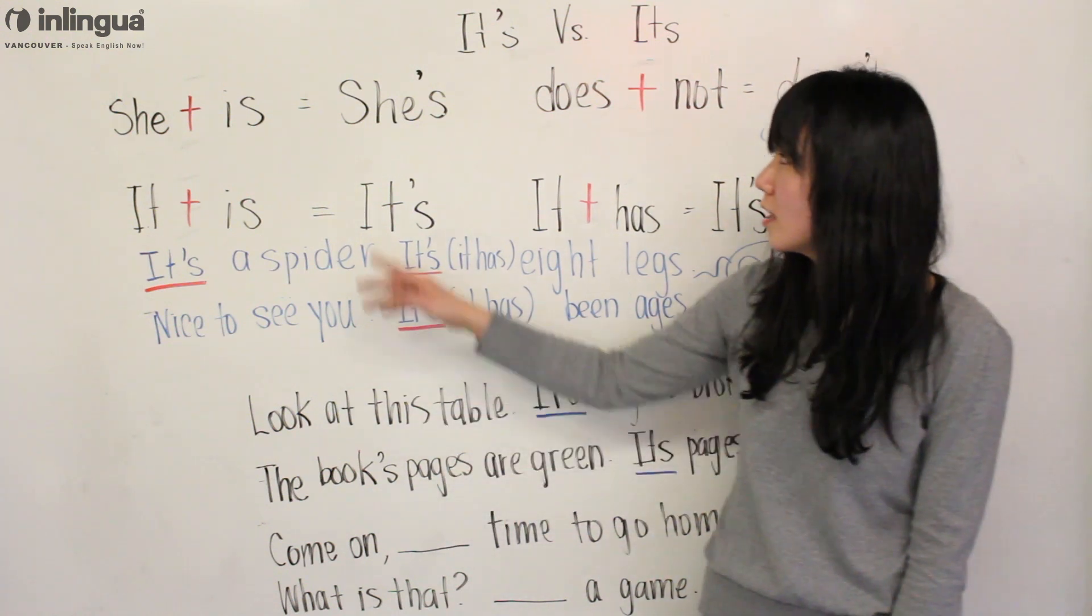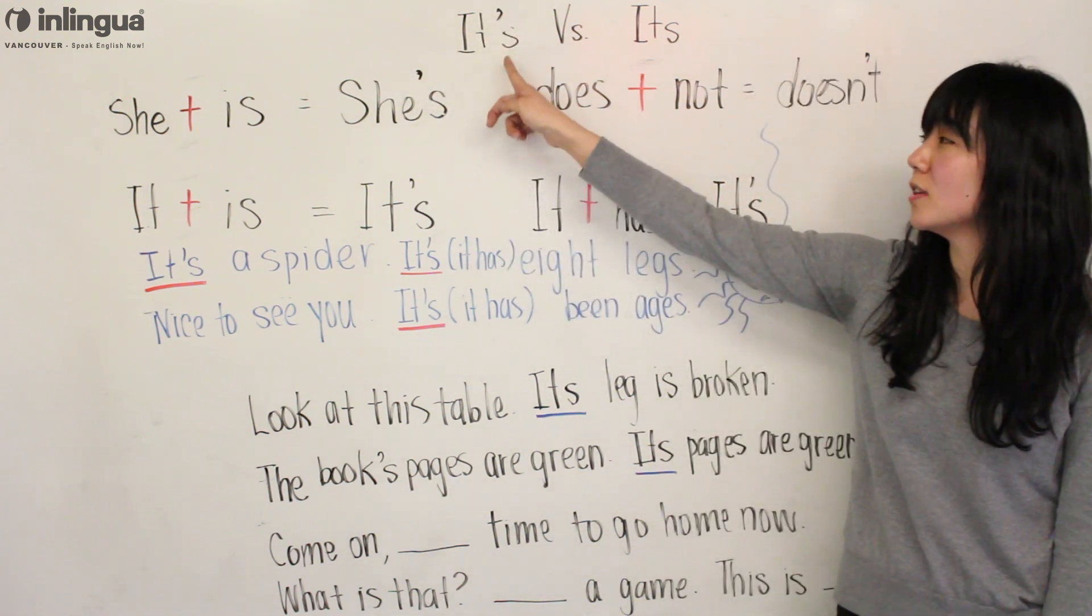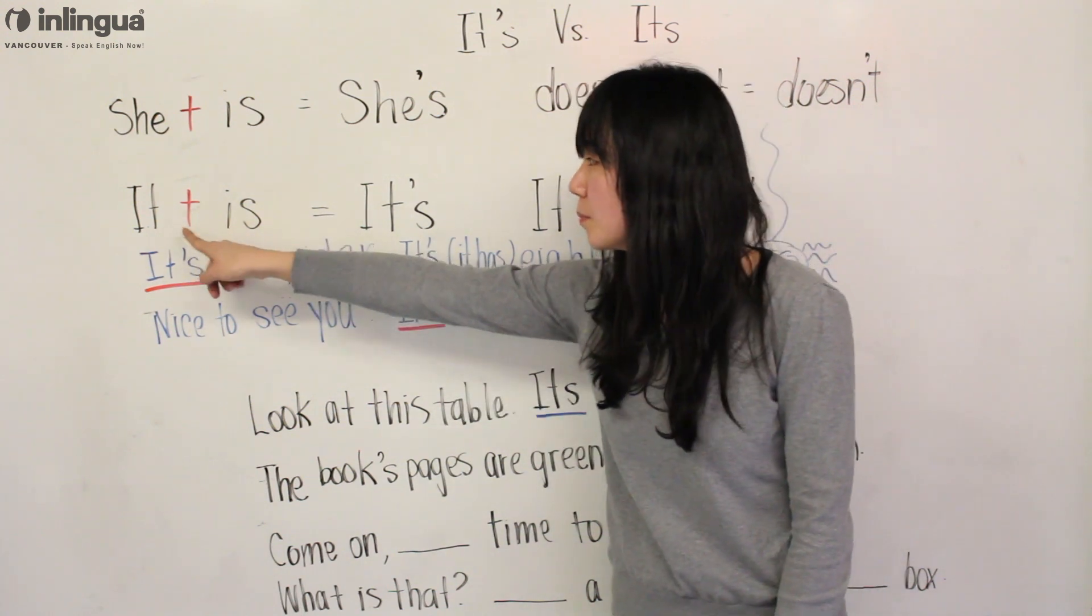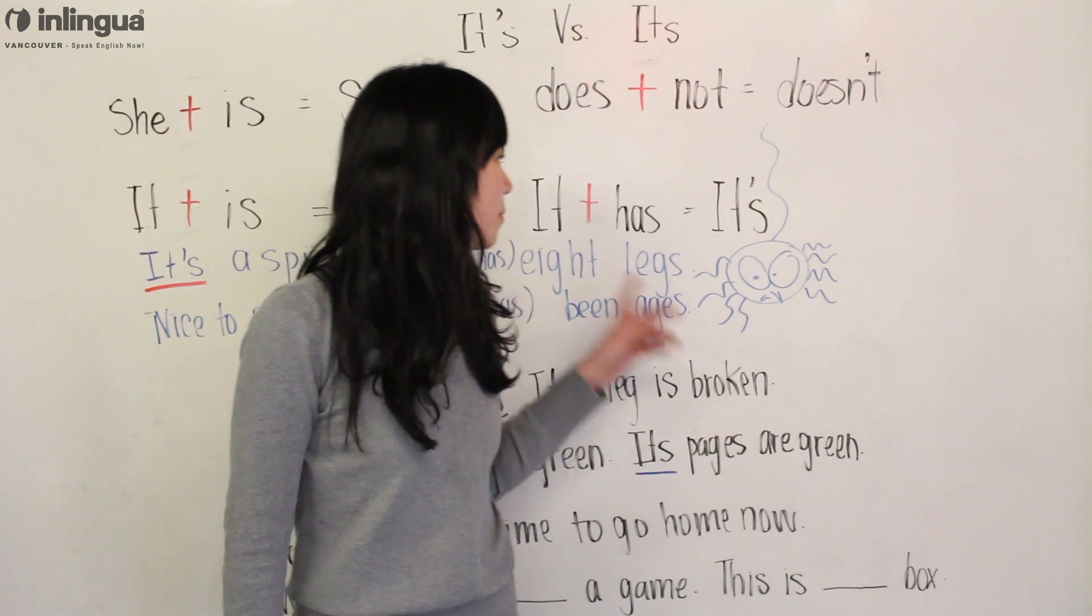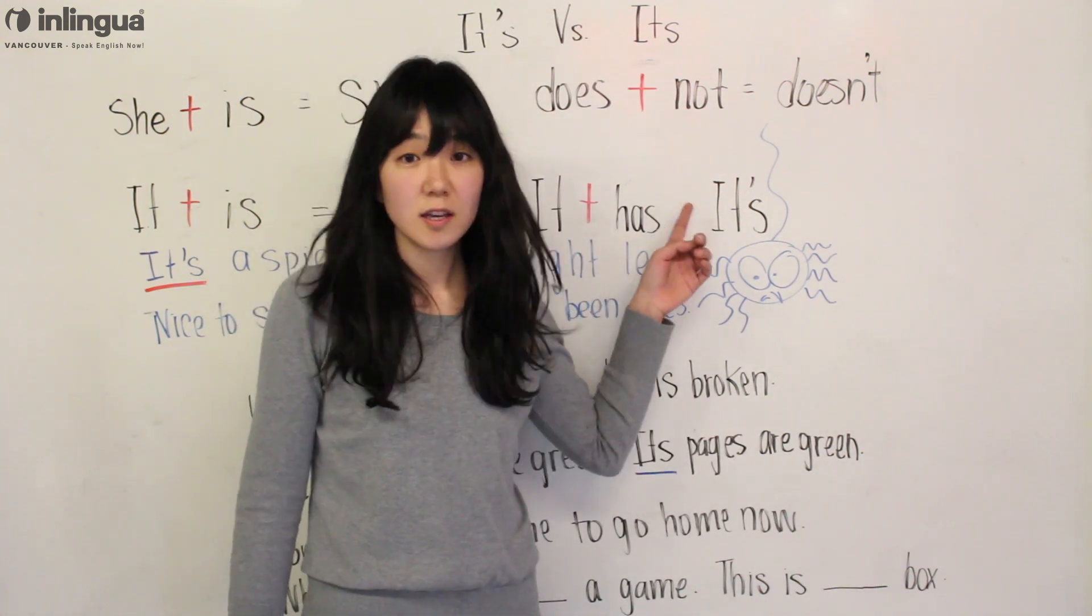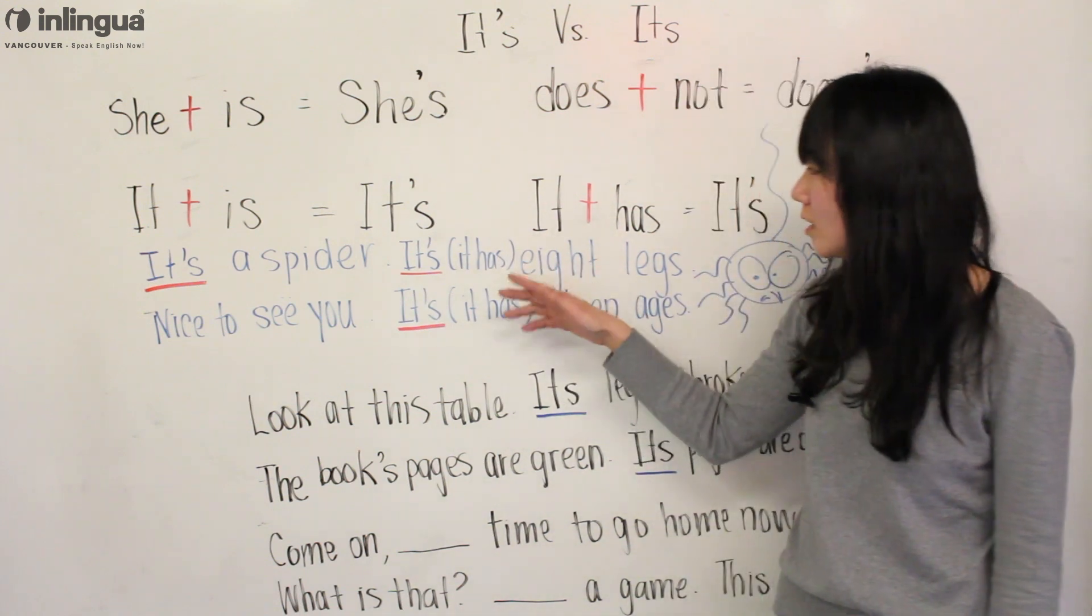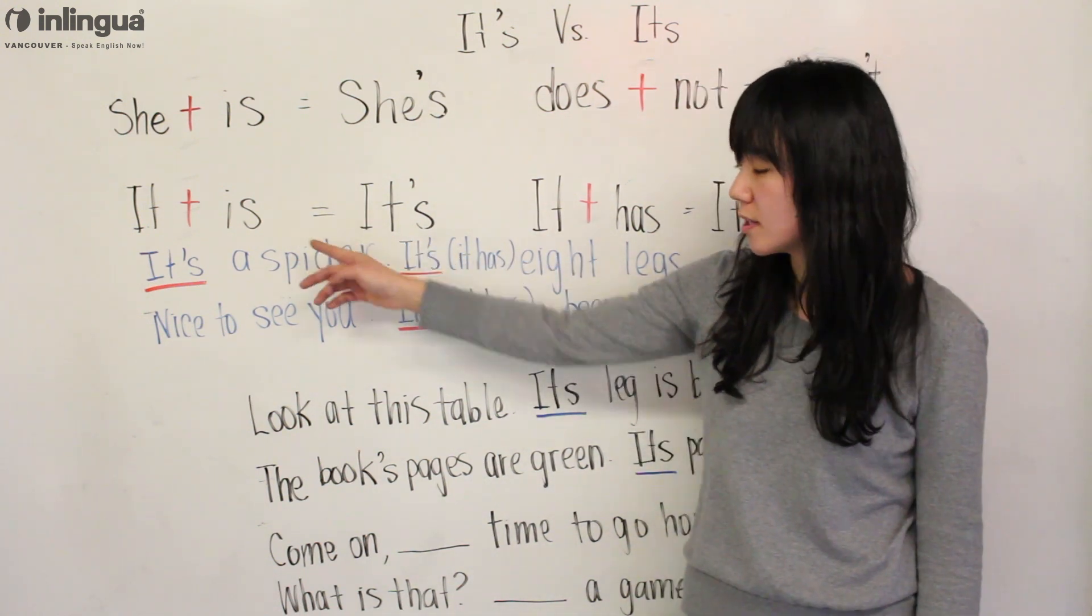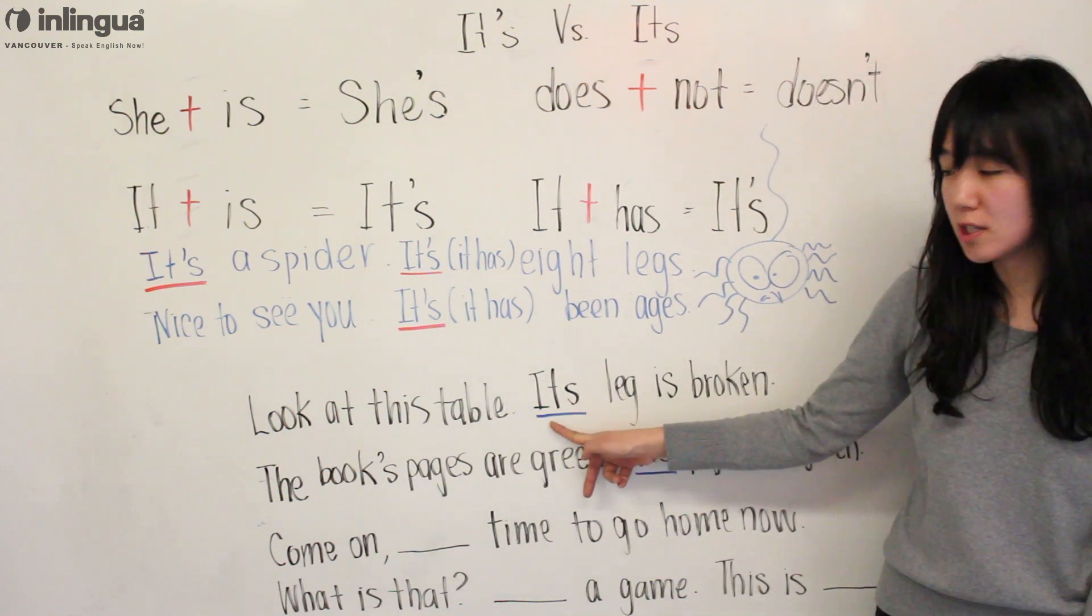So if you look here again, IT'S is a contraction. So it is IT plus IS equals IT'S, or it can be IT plus HAS equals IT'S. And again, you have to look into the context to see if it is IT HAS or if it is IT IS. Then there is ITS, which shows possession.